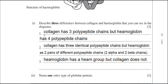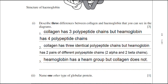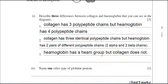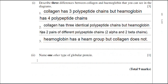My written answer for the differences between haemoglobin and collagen: collagen has three polypeptide chains but haemoglobin has four polypeptide chains — a direct comparison. Collagen has three identical polypeptide chains, but haemoglobin has two pairs of different chains (two alpha and two beta chains). Lastly, haemoglobin has a heme group but collagen does not. There are other differences I could have quoted, but the examiner only wanted three, so we'll look at the mark scheme for the other marking points.